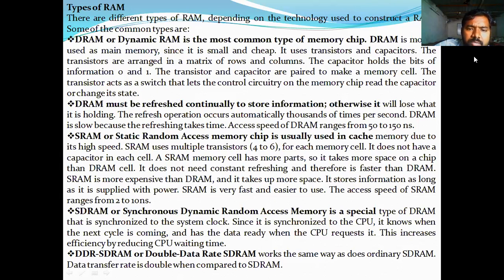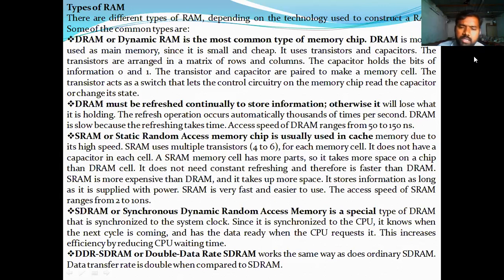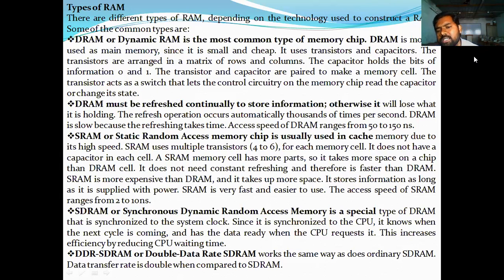The second RAM type is SRAM — Static Random Access Memory chip. It is faster when compared with DRAM. SRAM uses multiple transistors, 4 to 6, and is more expensive than DRAM because of its speed. SRAM speed is 2 to 10 nanoseconds, compared to DRAM's 50 to 150 nanoseconds.